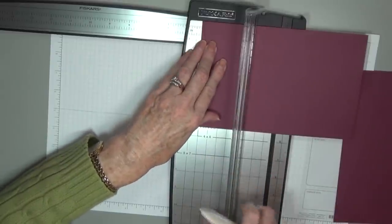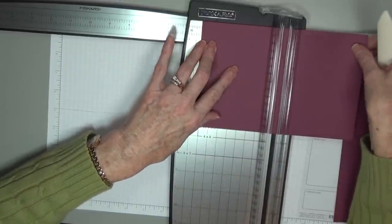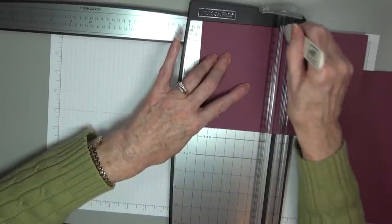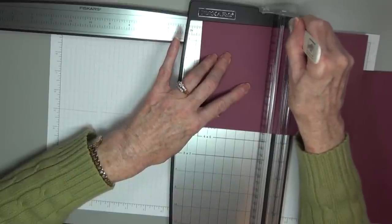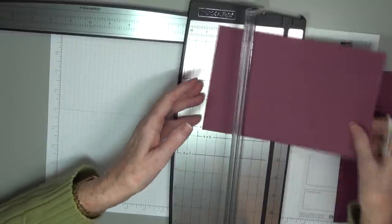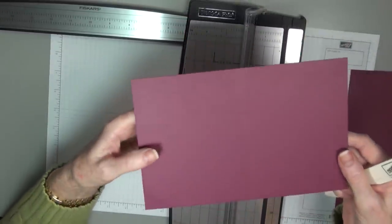Once again, double-check, make sure you've got that correctly. And I just use my bone folder, and I start right up here. Just before you get to the cardstock, you can put it into that groove, and I just bring it down. That's all there is to it. Can you see that?